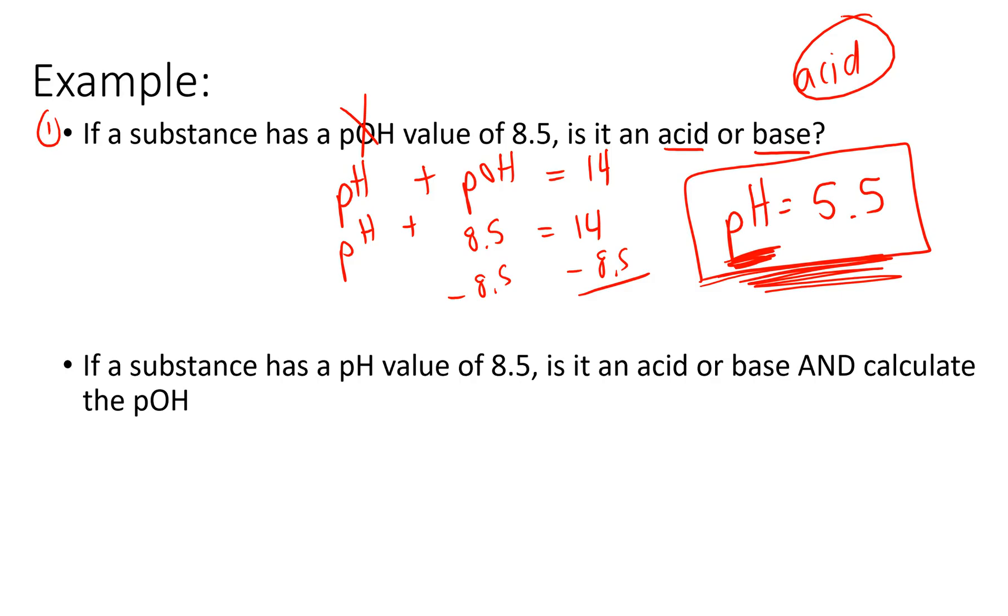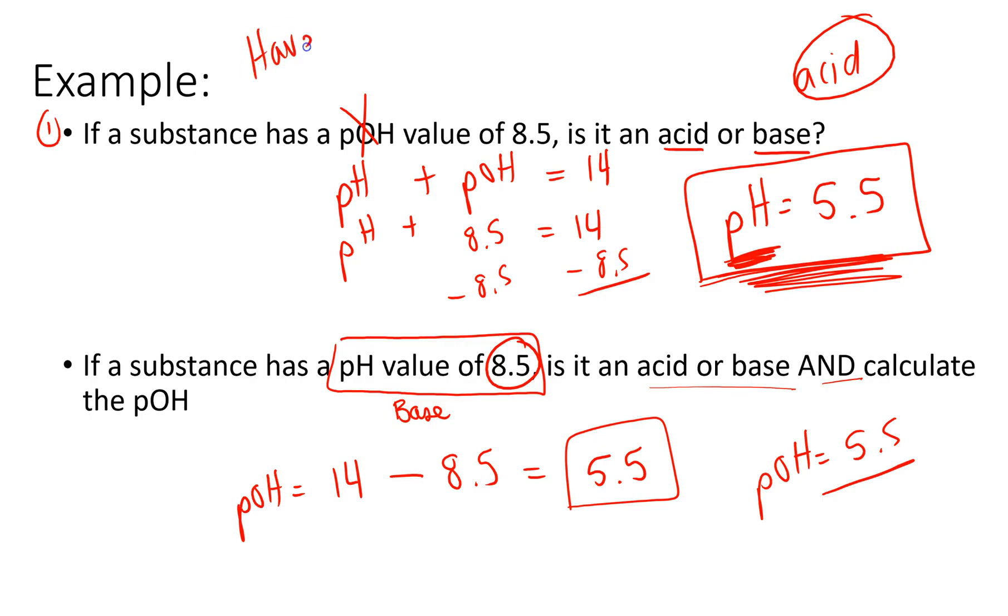Next one. If a substance has a pH value of 8.5, is it an acid or base and calculate the pOH? All right, so this time we're given the pH value, so that means that we can know right off the bat that this is a base. The value's above 7, so that makes it a base. To calculate the pOH, all we're gonna do is take 14 - 8.5, and we're gonna have 14 - 8.5 is giving us a pOH value of 5.5, pOH = 5.5. Now obviously I just used the same two values to work this problem, but you won't always be using the same value. So what I want you to see is you have to know pH to tell if acid or base.